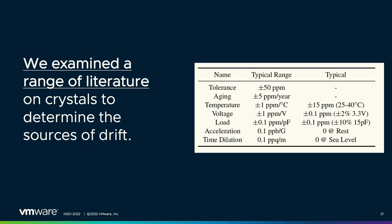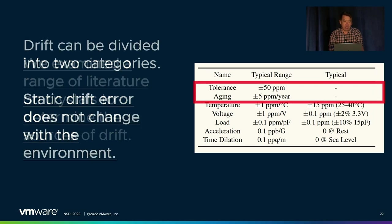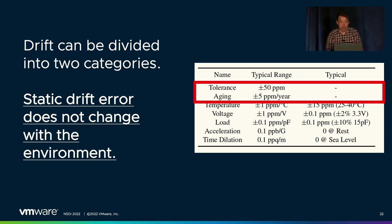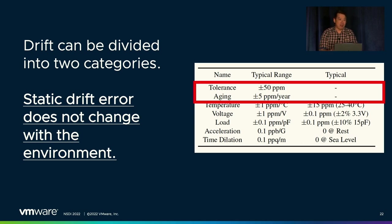We examined a wide range of literature on crystals to determine the source of crystal drift, and the sources are summarized in a table. We found that drift could be divided into two major categories. Static drift doesn't change with environmental conditions — for instance, since crystals are cut using a mechanical process, there's some tolerance in the way they're cut. This is usually easy to fix: if the crystal vibrates at 24.999 megahertz, we can learn that offset and correct for it.